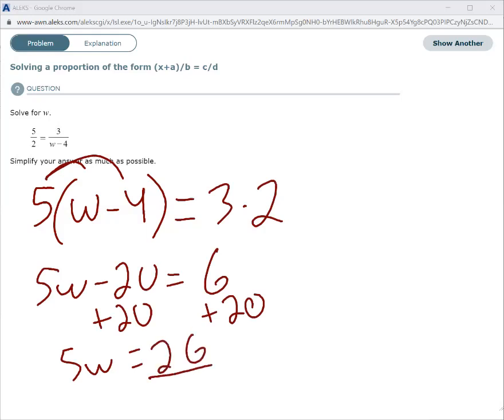Then I just need to divide by 5. So w equals 26 over 5.